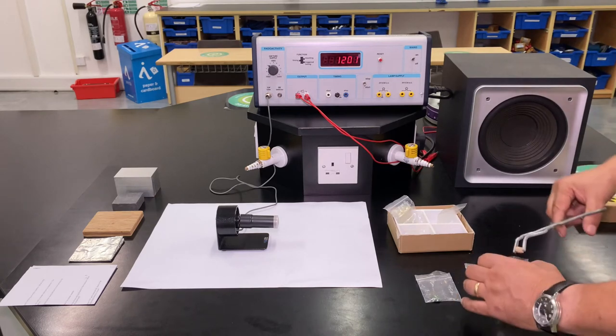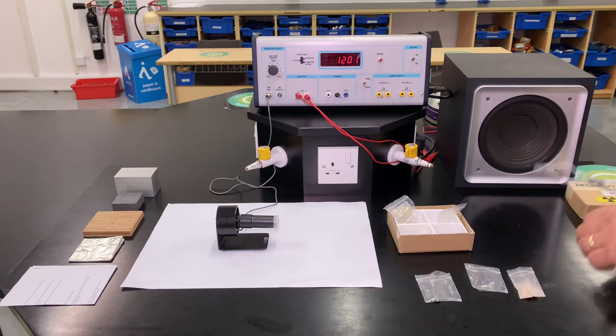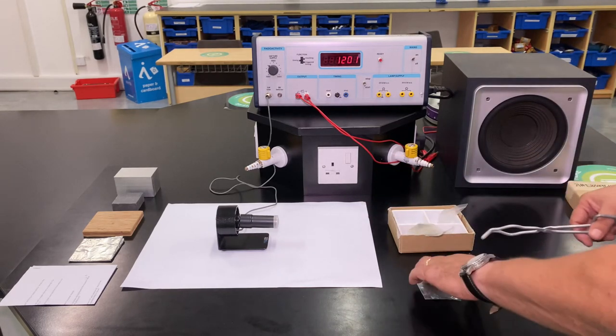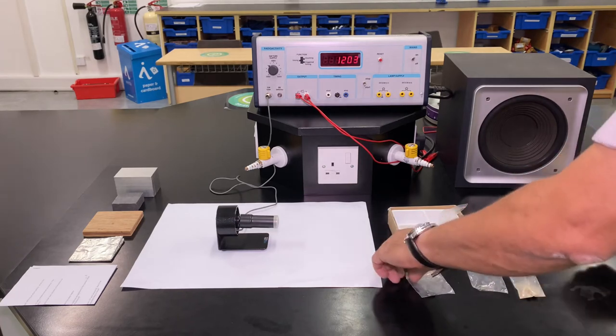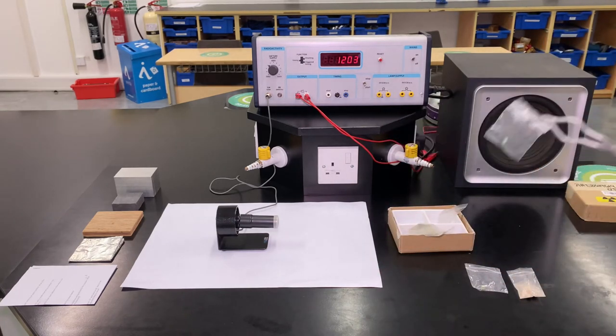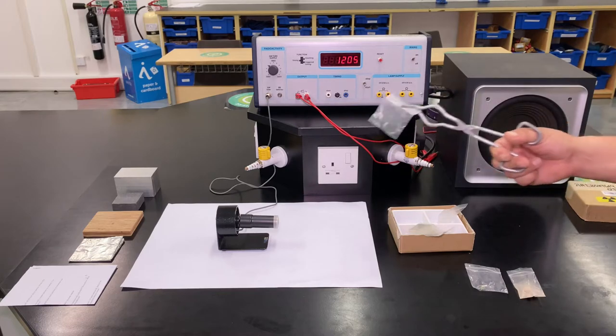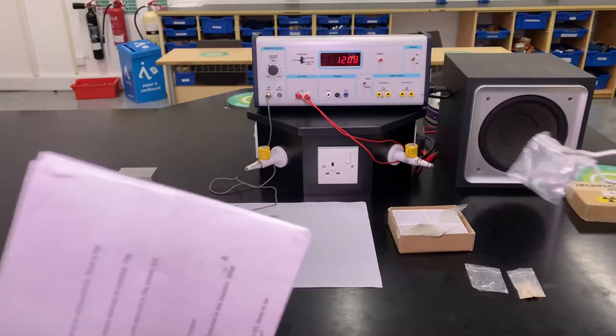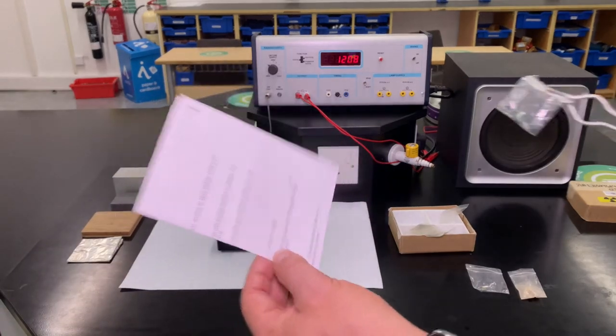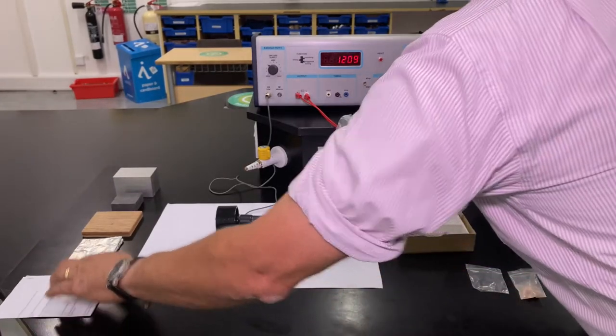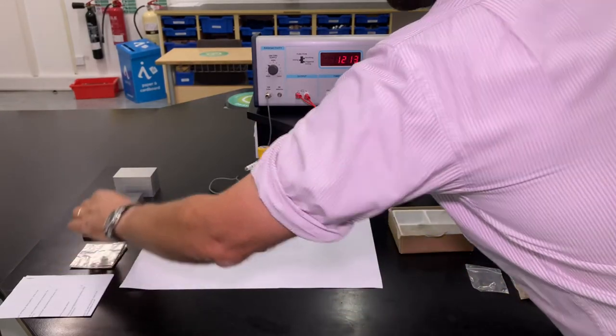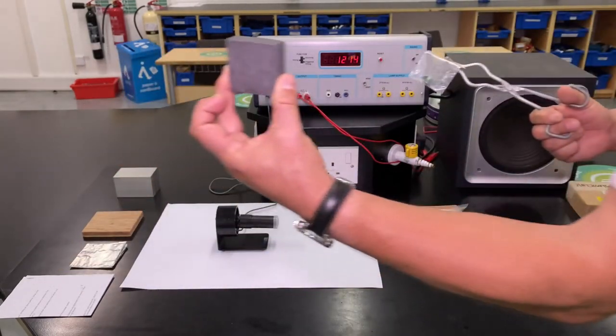What we want to do now is show what stops them. As we know, alpha is stopped by a couple of sheets of paper. Beta particles are stopped with a few sheets of aluminum. Gamma rays will be stopped with lead.